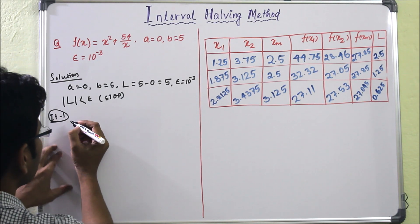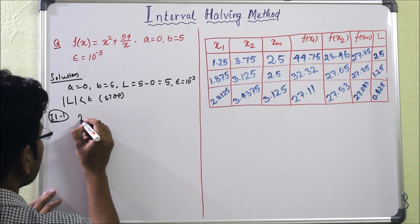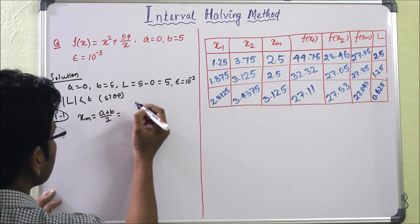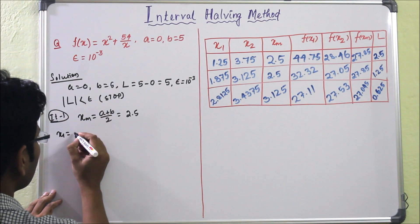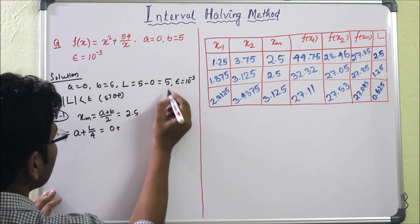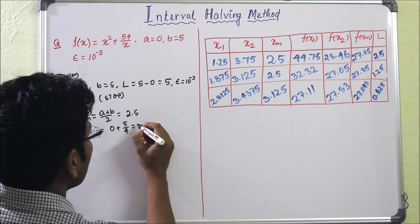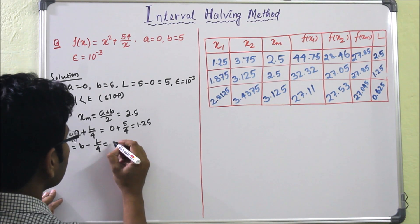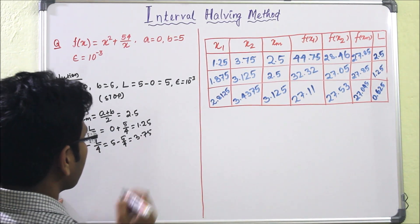Now we will find Iteration 1. For the Interval Halving Method, we have to find three points each iteration. First, xm = (a + b)/2 = 2.5. Then x1 = a + L/4 = 0 + 5/4 = 1.25. Similarly, x2 = b − L/4 = 5 − 5/4 = 3.75.